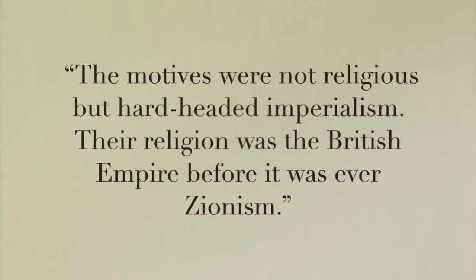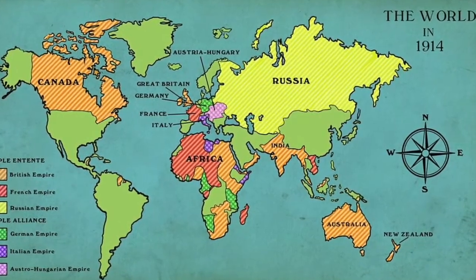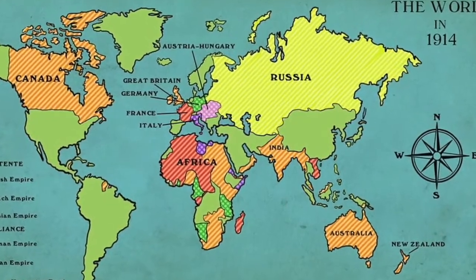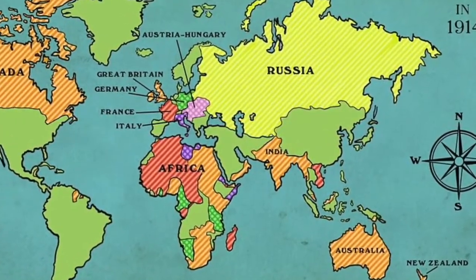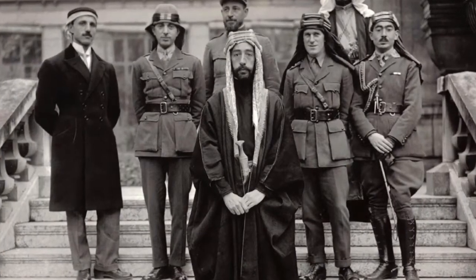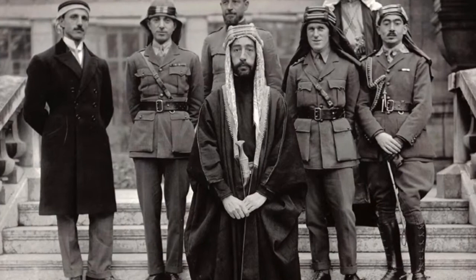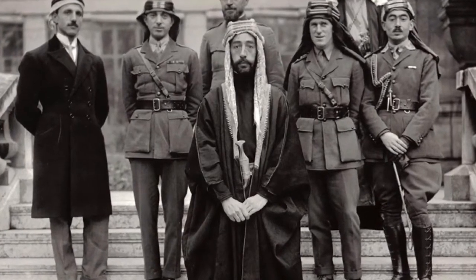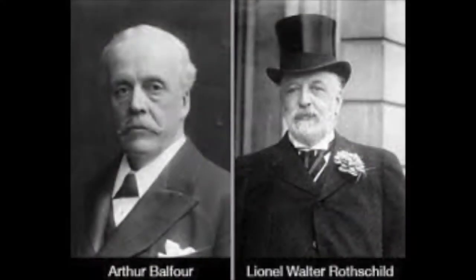The motives were not religious, but hard-headed imperialism. Their religion was the British Empire before it was ever Zionism. London realized the strategic significance of Palestine's location near the Suez Canal, a crucial piece of infrastructure in maintaining India, the British Empire's crown jewel, and noted the value of — in the words of future governor of Jerusalem Ronald Storrs — a loyal Jewish altar in a sea of potentially hostile Arabism. A particularly appealing possibility given growing sentiments of Arab nationalism and anti-colonialism in Britain's Arab territories.